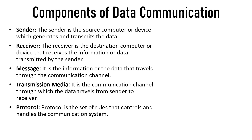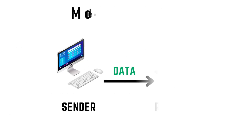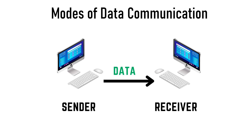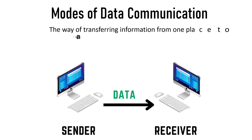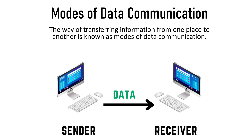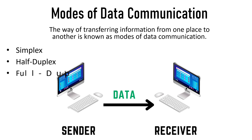So those are the five important components of data communication. Now let's understand the modes of data communication. The way of transferring information from one place to another is known as the mode of data communication — how data is transmitted from sender to receiver. There are three modes: simplex, half duplex, and full duplex.